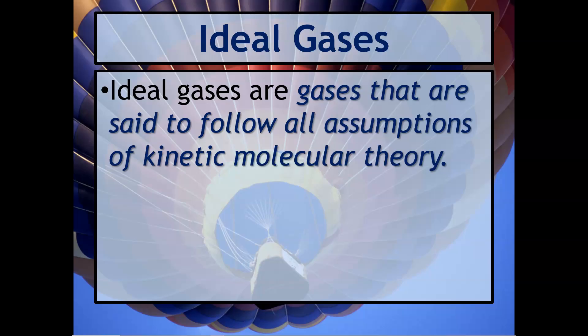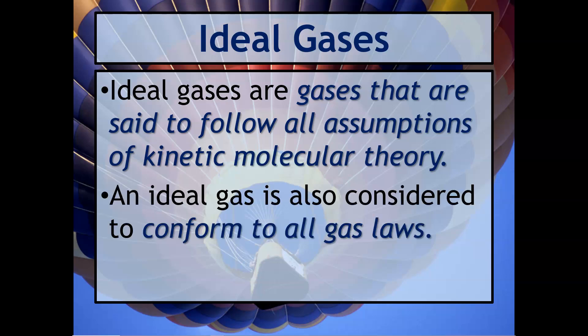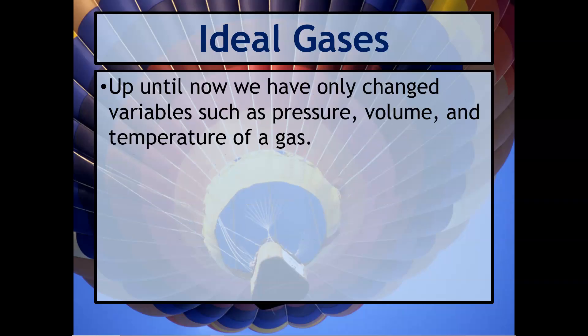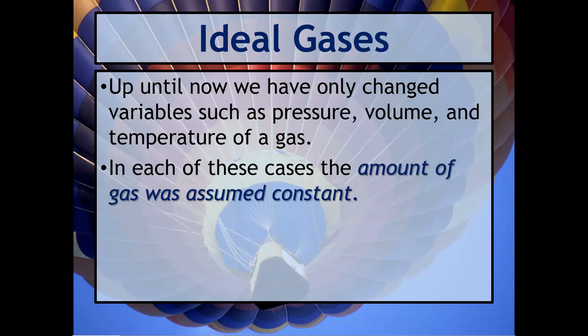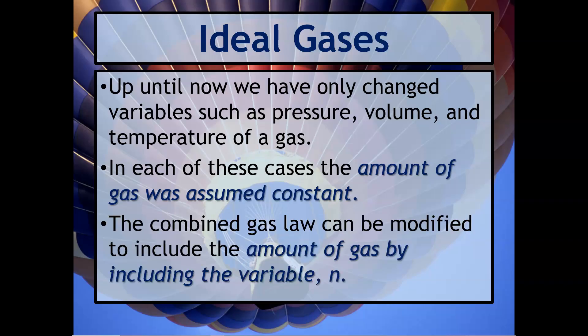Ideal gases are gases that are said to follow all assumptions of kinetic molecular theory. We also say that an ideal gas is considered to conform to all the gas laws and all the properties we've observed. Up until now, we've only changed variables such as pressure, volume, and temperature, assuming that the amount of gas is constant.